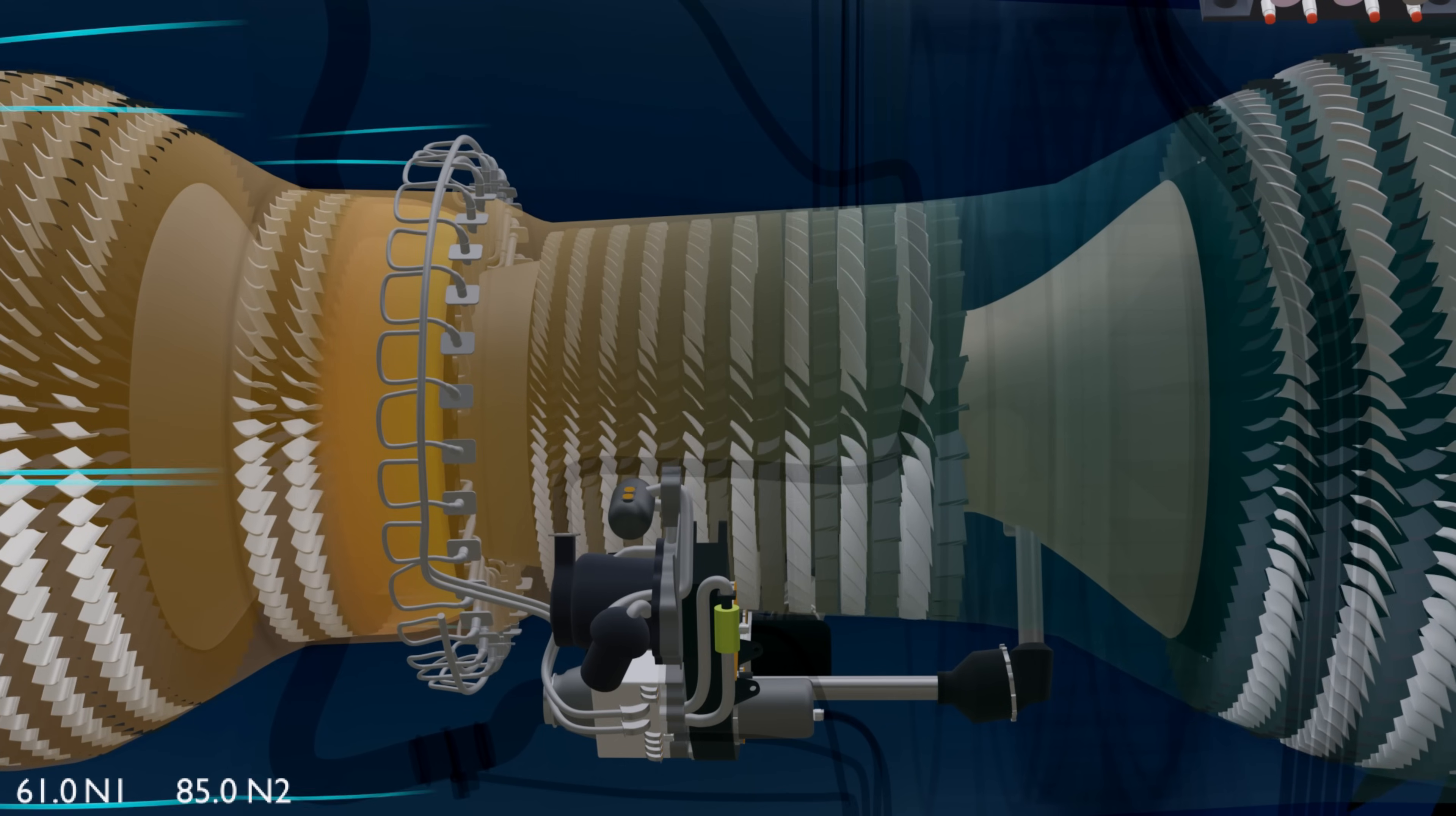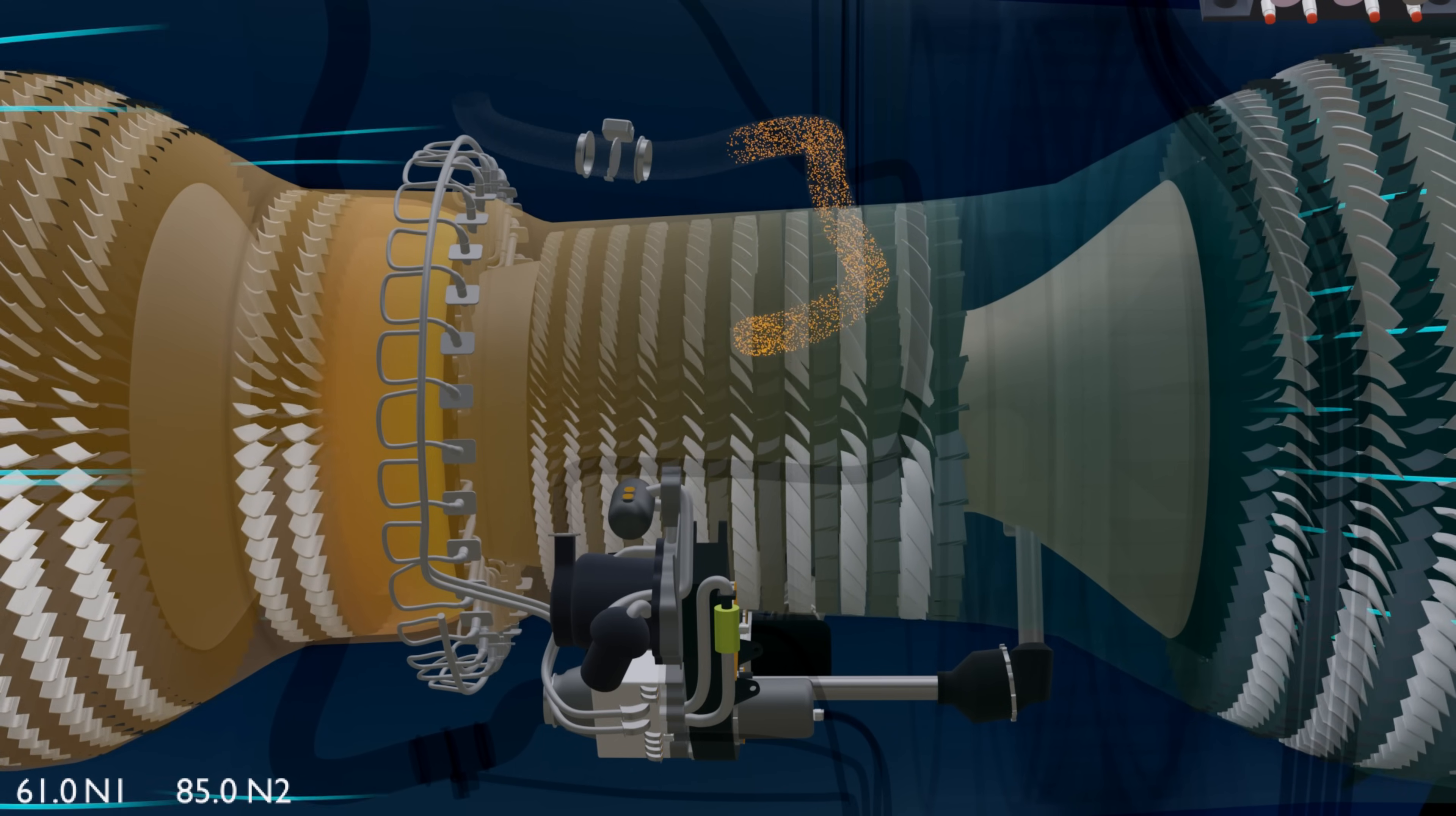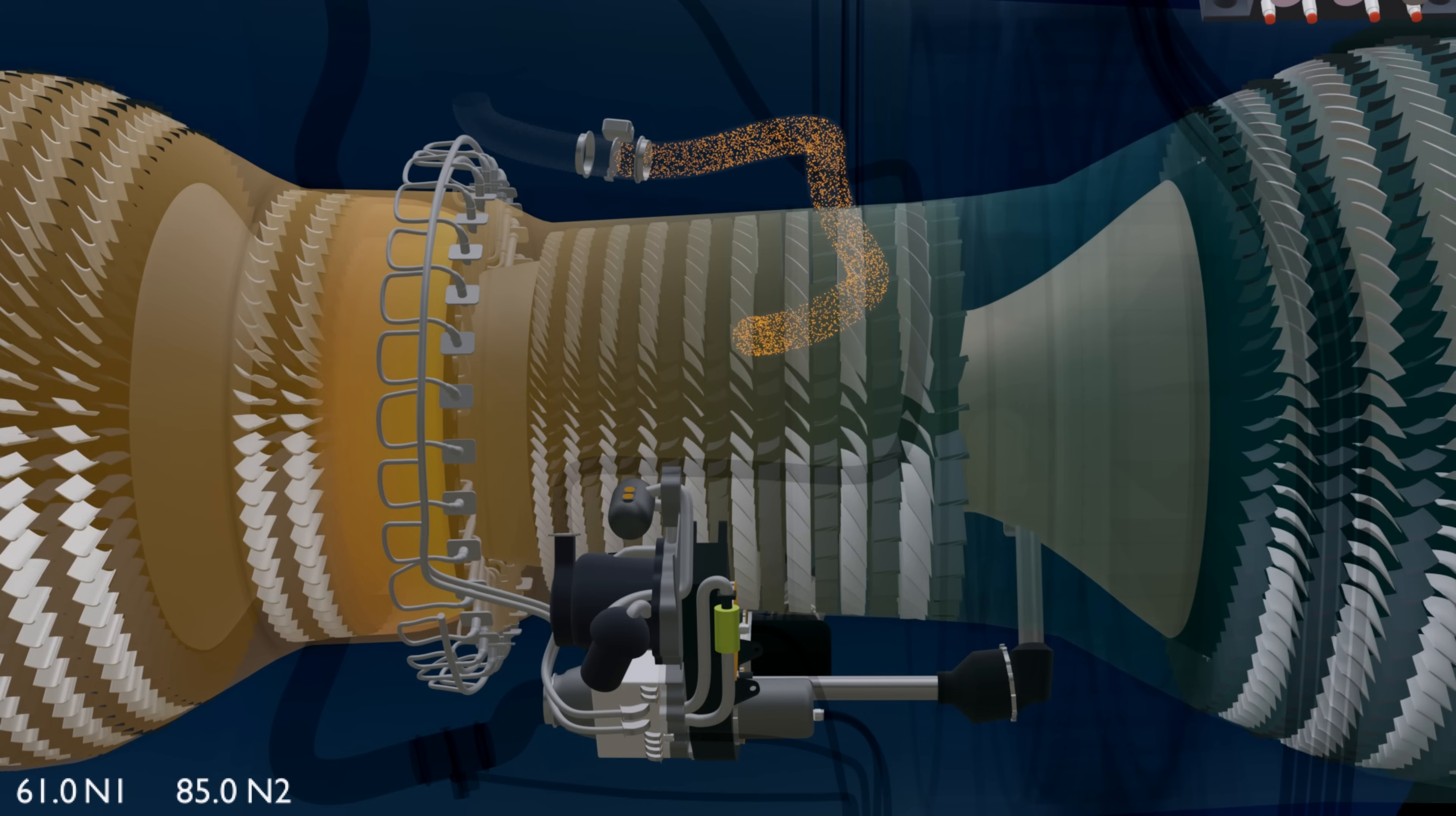The bleed air from the engine is taken from the high pressure compressor's fourth stage. The fourth stage air, also known as intermediate stage pressure, reaches the pressure regulating valve.